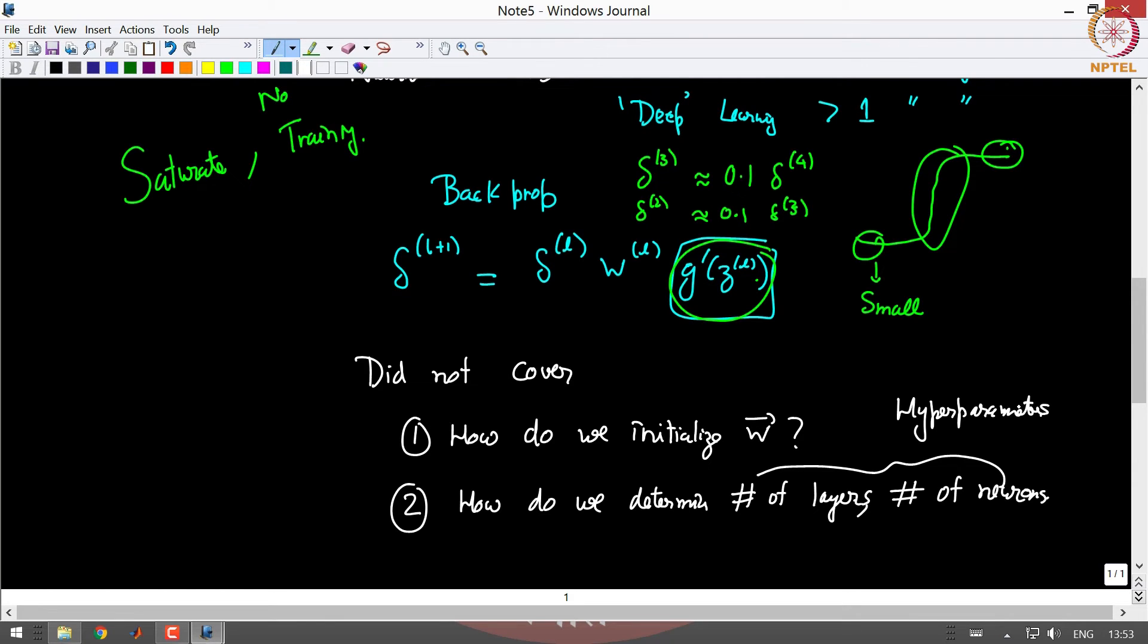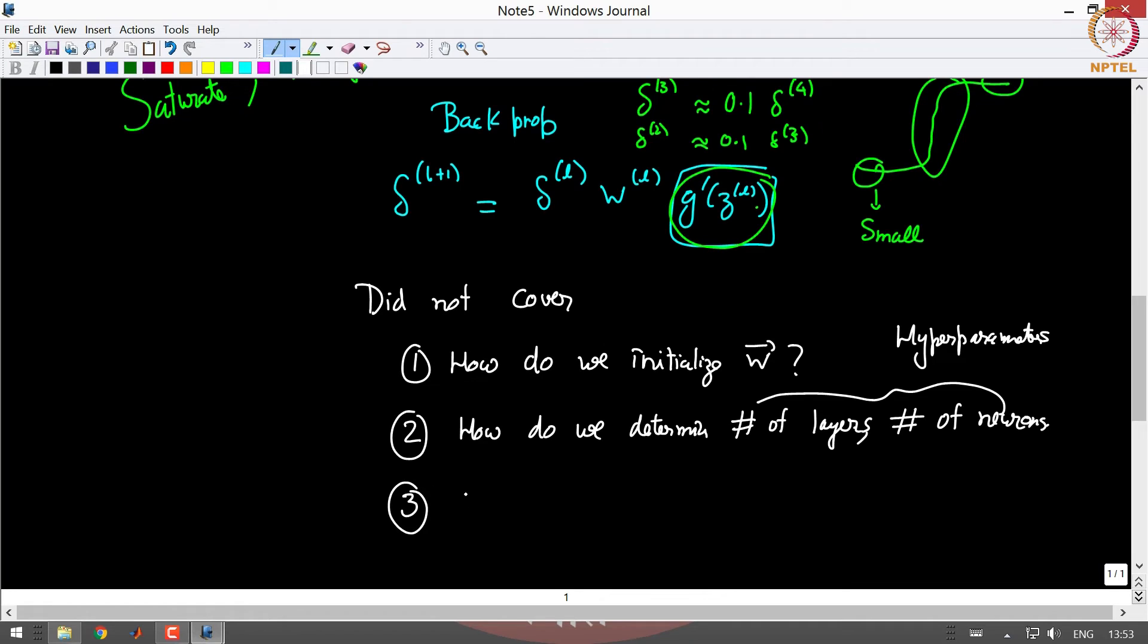Finally what non-linearity do you use? I showed just one, I showed sigmoid, but there are other possible non-linearities that people use. One is tan h which is very similar to the sigmoid and instead of going from zero to one it goes from minus one to one. Another possibility is something called rectified linear unit, in short it is called ReLU. It is completely flat at one end and then it is simply linear.